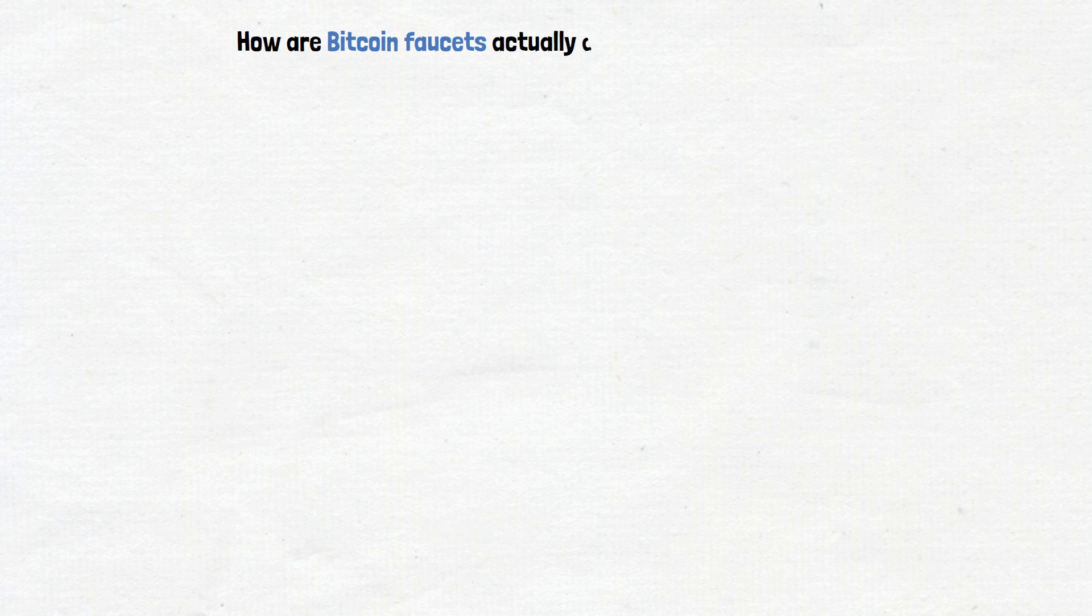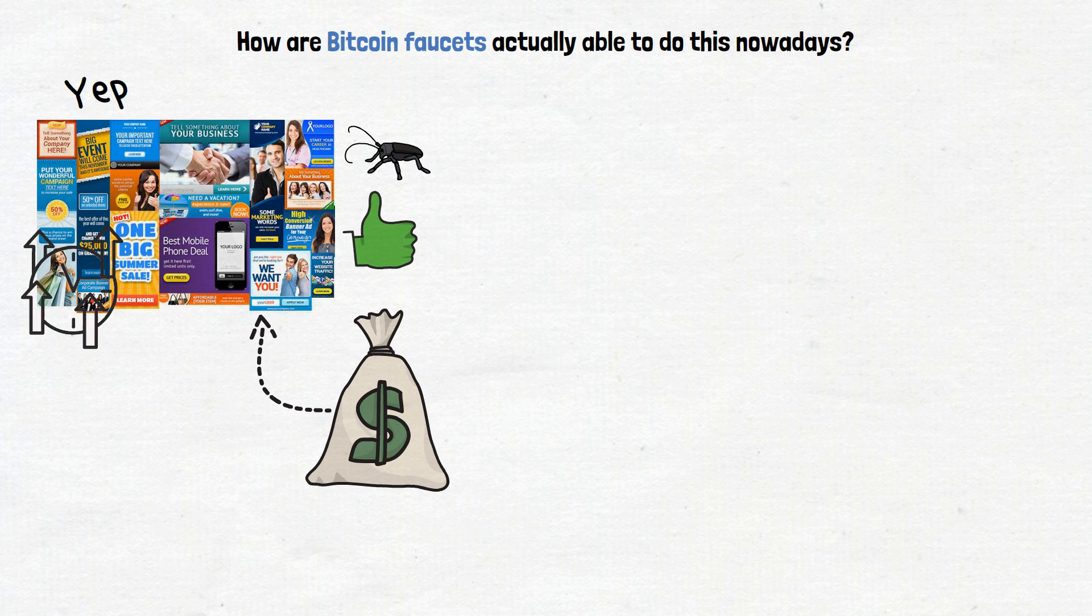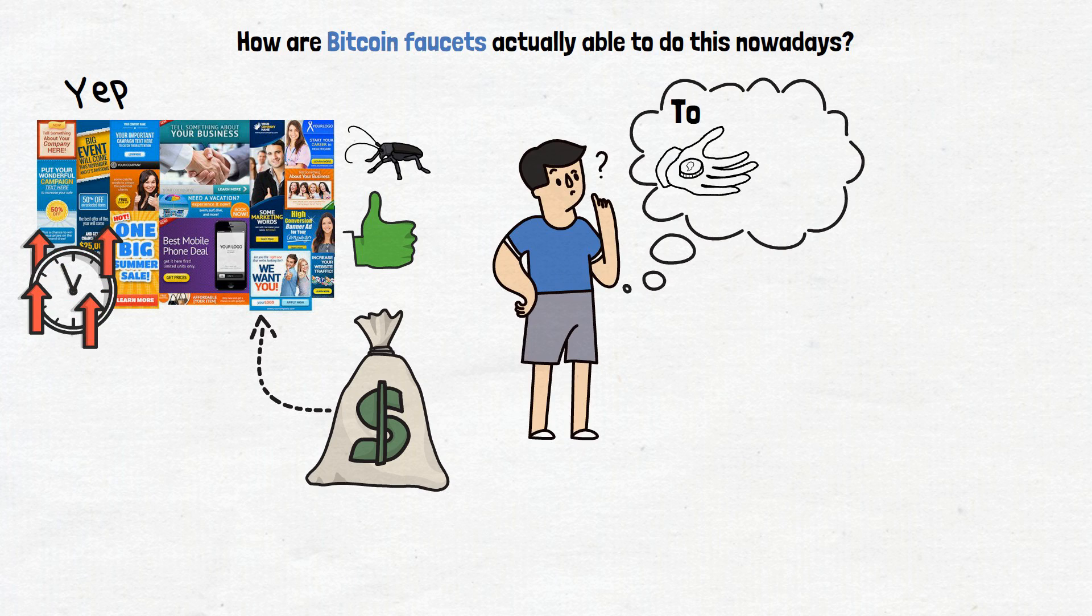But wait, how are Bitcoin faucets actually able to do this nowadays? Well, they usually make money through advertisements. Yep, those pesky but sometimes useful ads you see online. We'll talk about them a bit more later though. Now you might be wondering, what would I earn for a task today? How much Bitcoin are we talking about here?